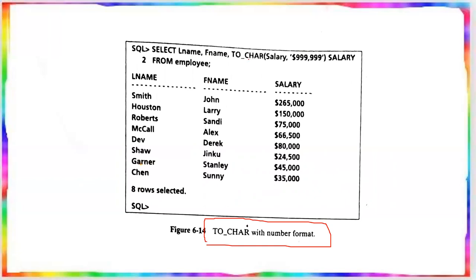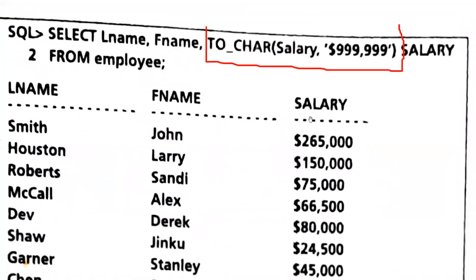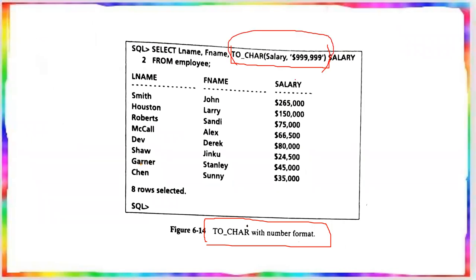For example, selecting last name, first name, and salary, the TO_CHAR conversion function is applied to the salary column with a format like '$999,999'. In the output, the salary column shows a dollar symbol followed by the value — for example, $265,000 or $75,000 preceded by the dollar symbol. This is how the TO_CHAR character function formats the output.